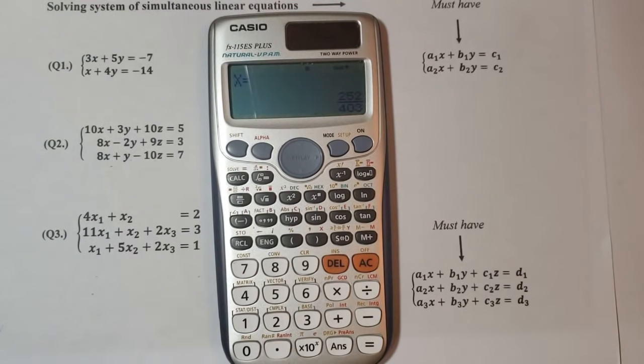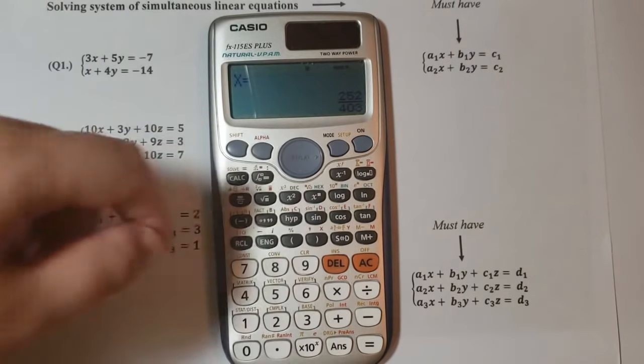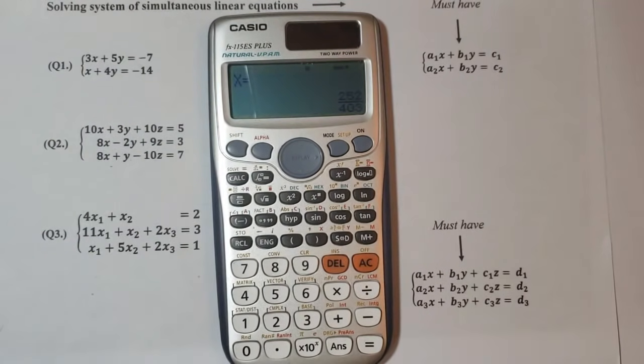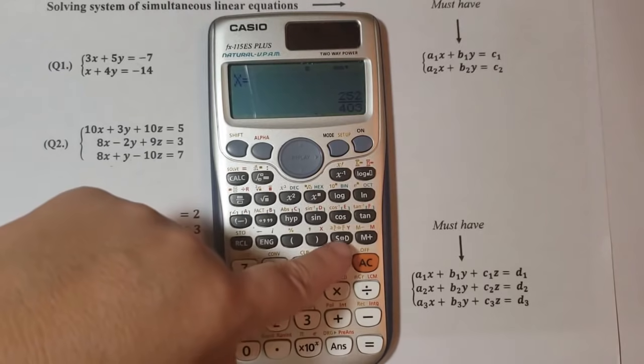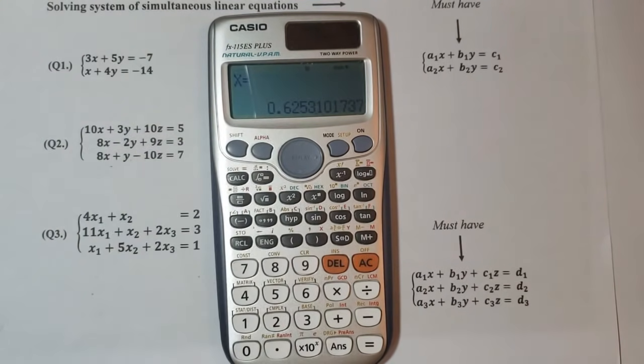Now we have for x we have 252 over 403. Since we have here a fraction, if you need to see the solution in a decimal you just press this SD key here and you will see the decimal number.